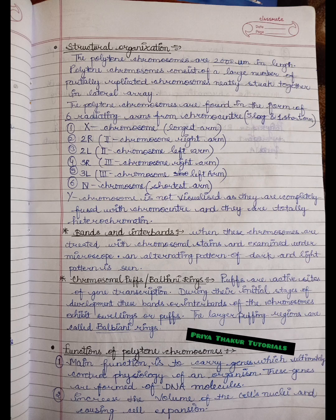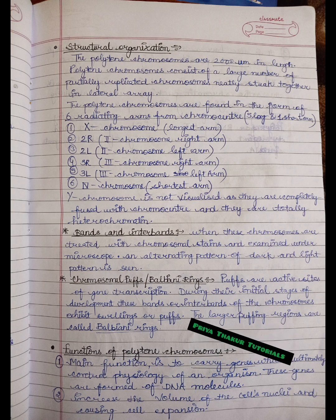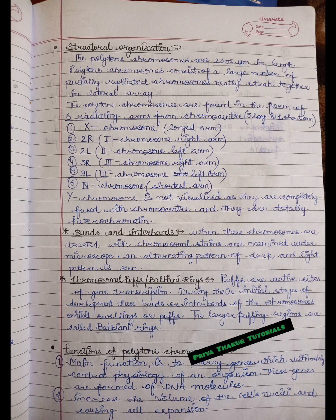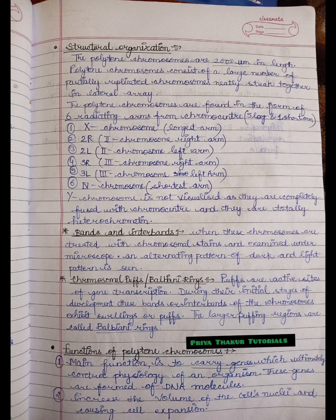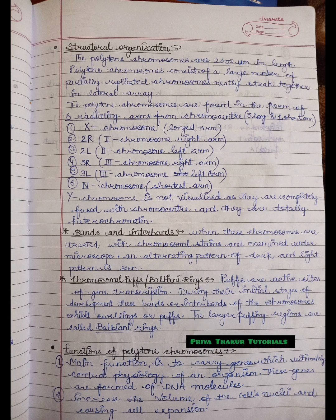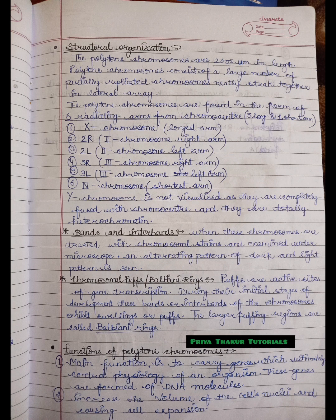Now let us talk about the structural organization of polytene chromosomes. Their length is 2,000 micrometers. Polytene chromosomes consist of a large number of partially replicated chromosomes neatly stuck together in a lateral array. They are found in the form of six radiating arms.